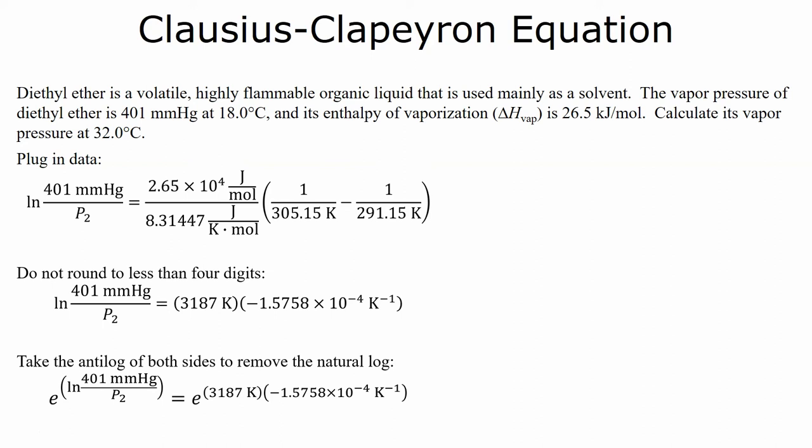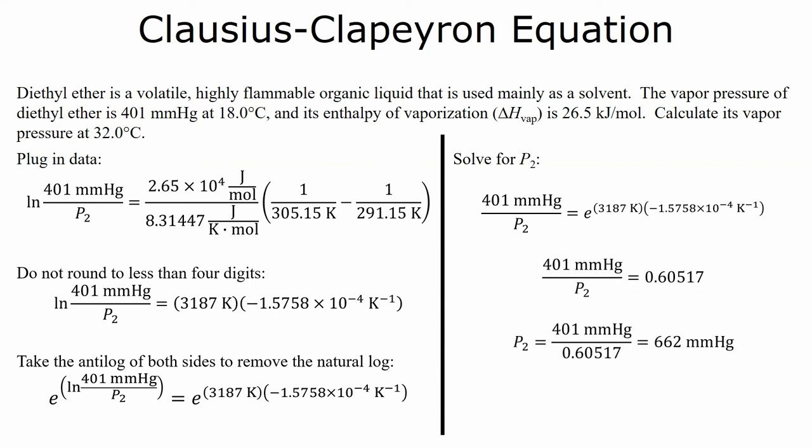So, to get rid of natural log, we just take the anti-log. So the anti-log of the natural log of X is just X. And now we're going to go ahead and solve for P2. Now, you'll notice in the end, we started with millimeters of mercury and we ended with millimeters of mercury. Everything else is canceled out.